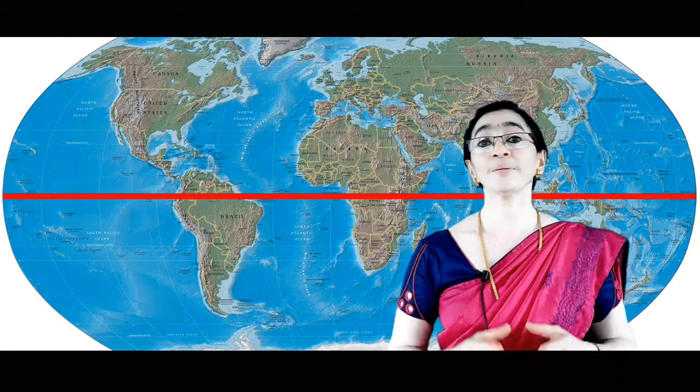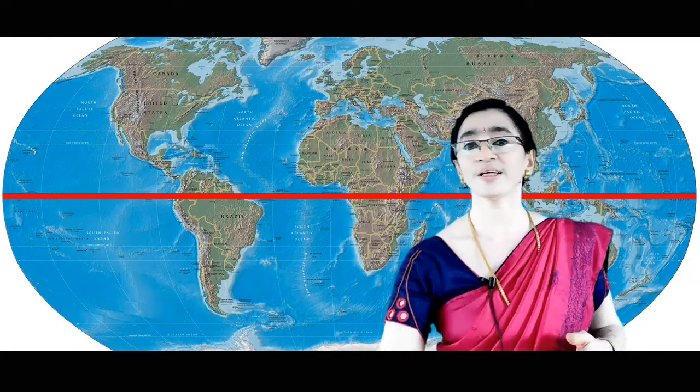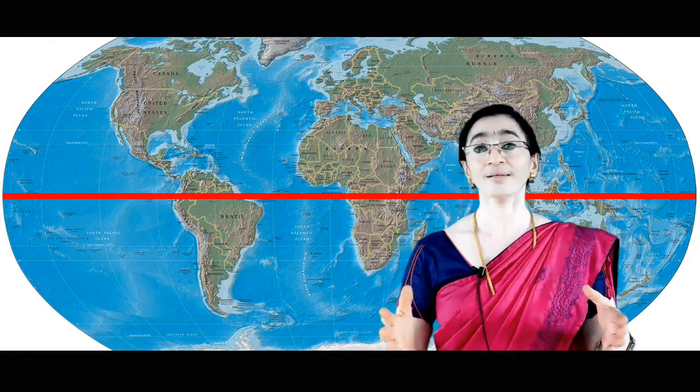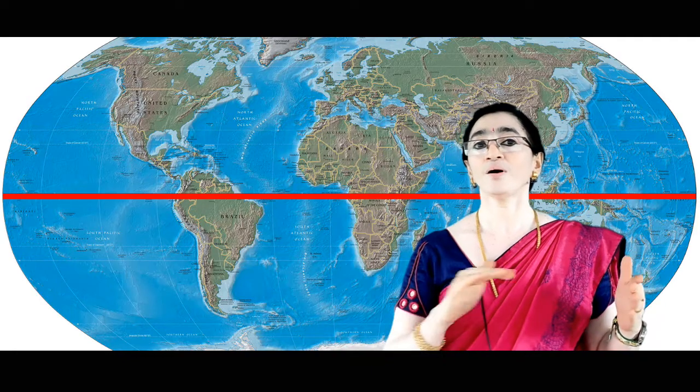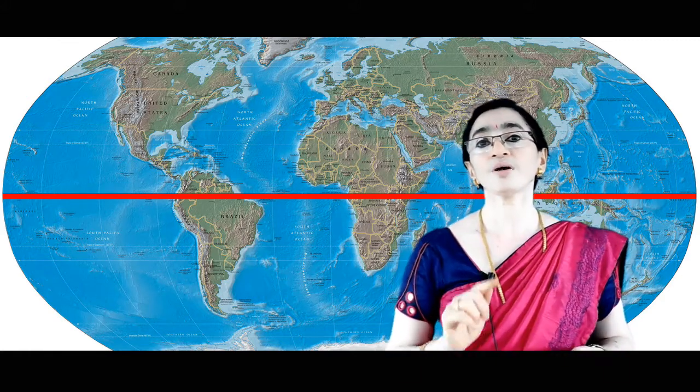Now we will discuss about important latitudes. First, we already mentioned the equator. The equator is the main parallel that divides our Earth into two equal halves. Its value is zero degrees. It is numbered zero because it is the main latitude that divides our Earth into equal halves.